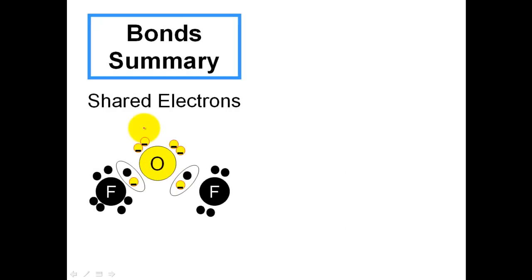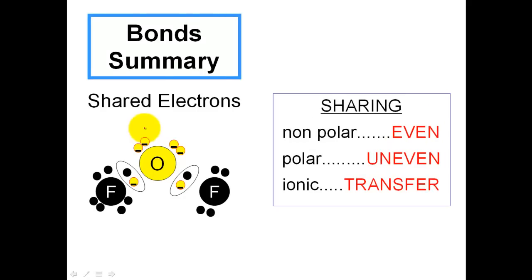A couple of review questions here. Before we get there, let's just check this out here. Once again, we're talking about these electrons, how are they shared? If it's a nonpolar bond, they're shared totally evenly. If it's a polar bond, that means I have an uneven sharing of electrons. An ionic bond is the full-on transfer or stealing of electrons.